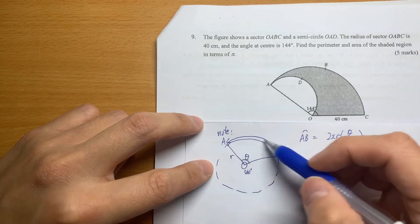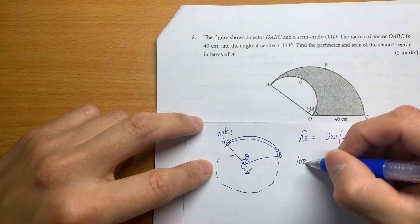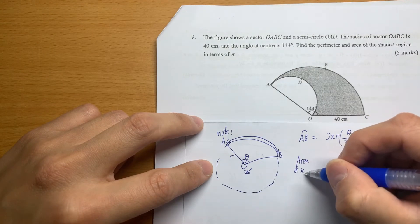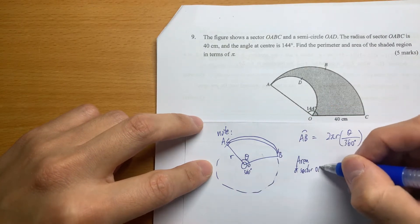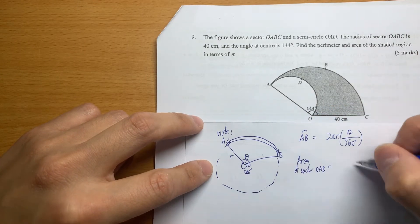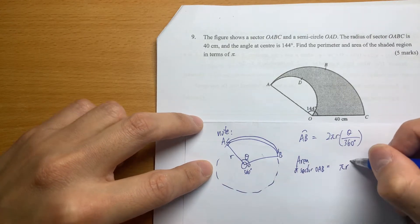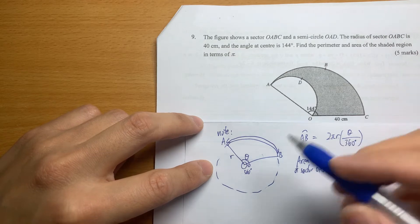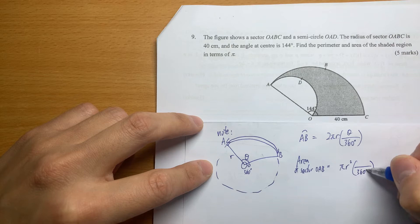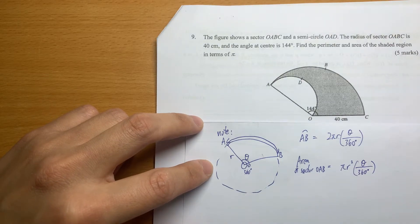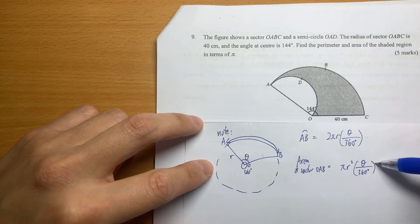Similar reasoning, if we want the area of sector OAB, then we use the area of the whole circle, πr², which is what we learned in primary school. Again, we don't have the full circle. Instead, we divide by 360 degrees and then we get θ from it.